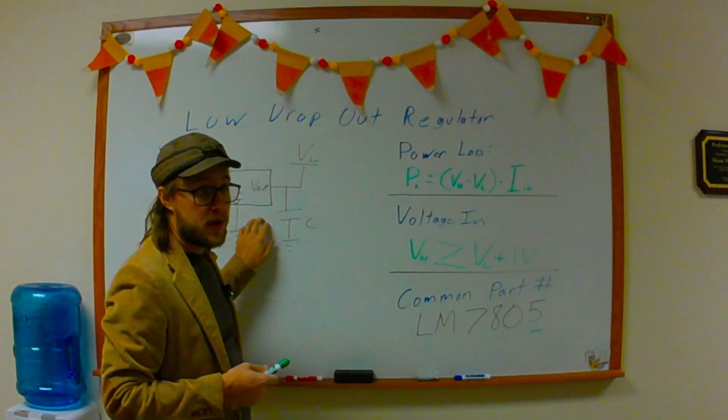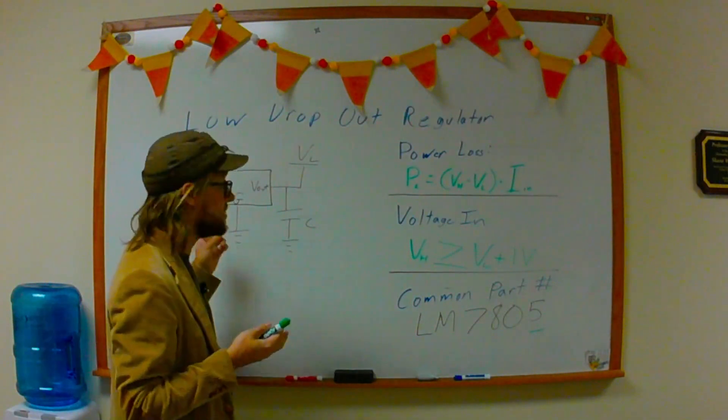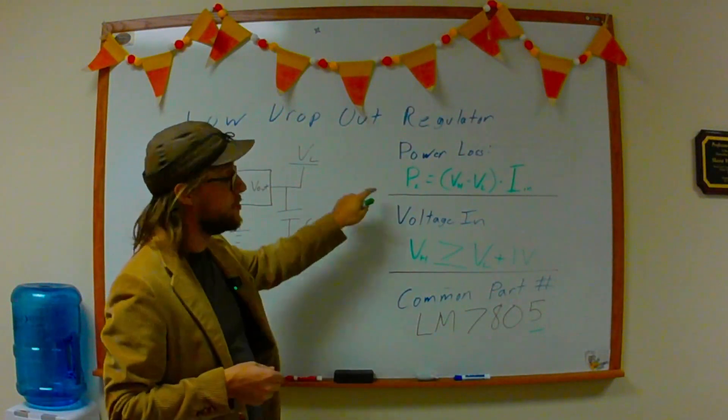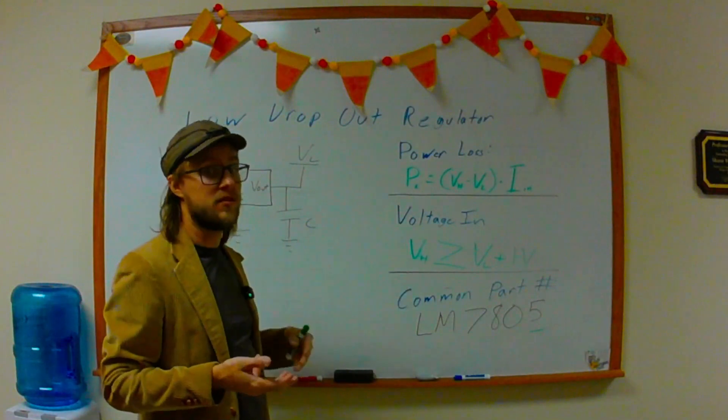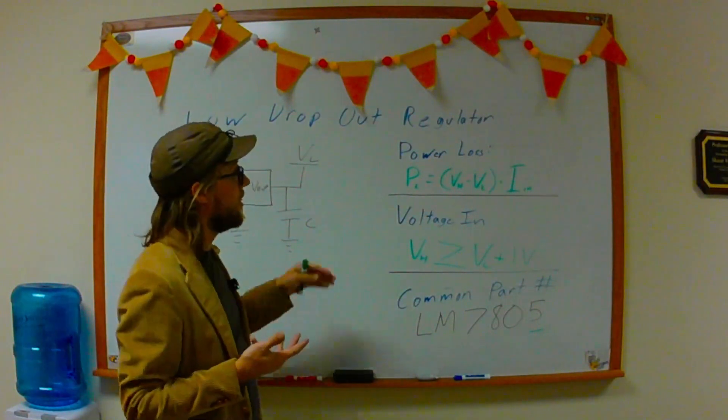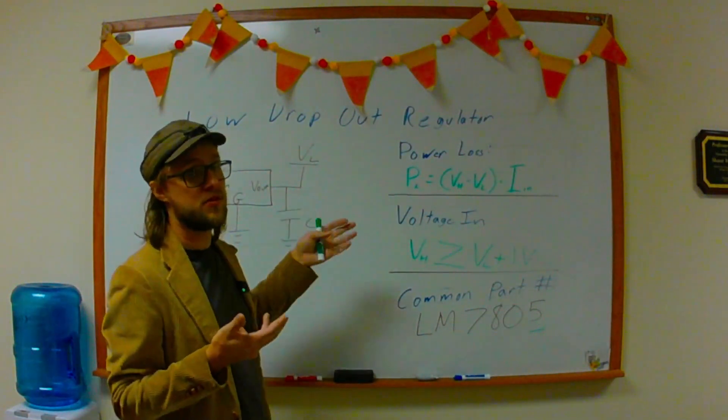So, the low dropout regulator, though they are very nice and easy to implement, remember that they do come with a cost. And so, if you're hooking something like an automotive system, that's pulling 12 volts down to even 3.3 volts, that can lead to substantial power losses.